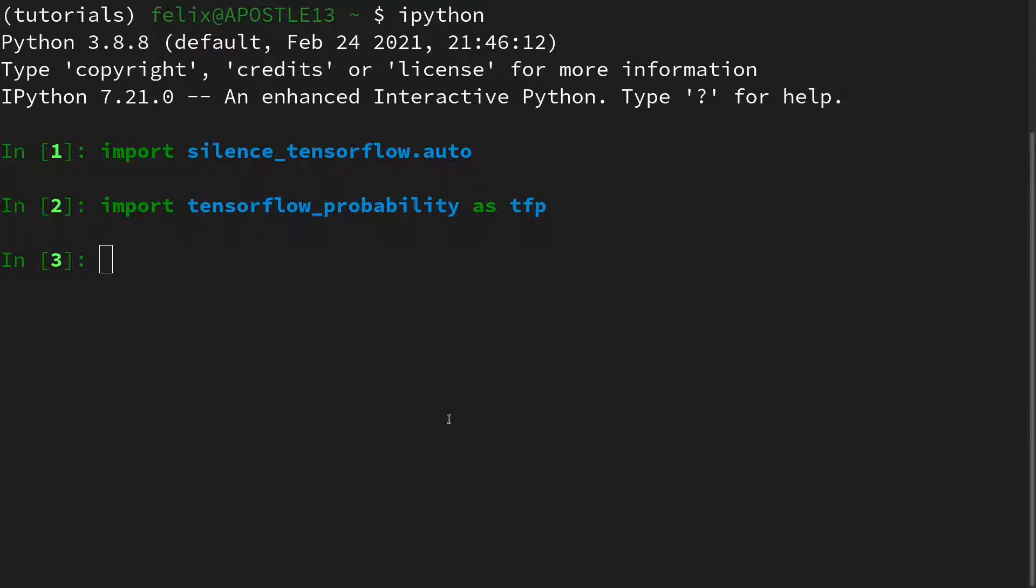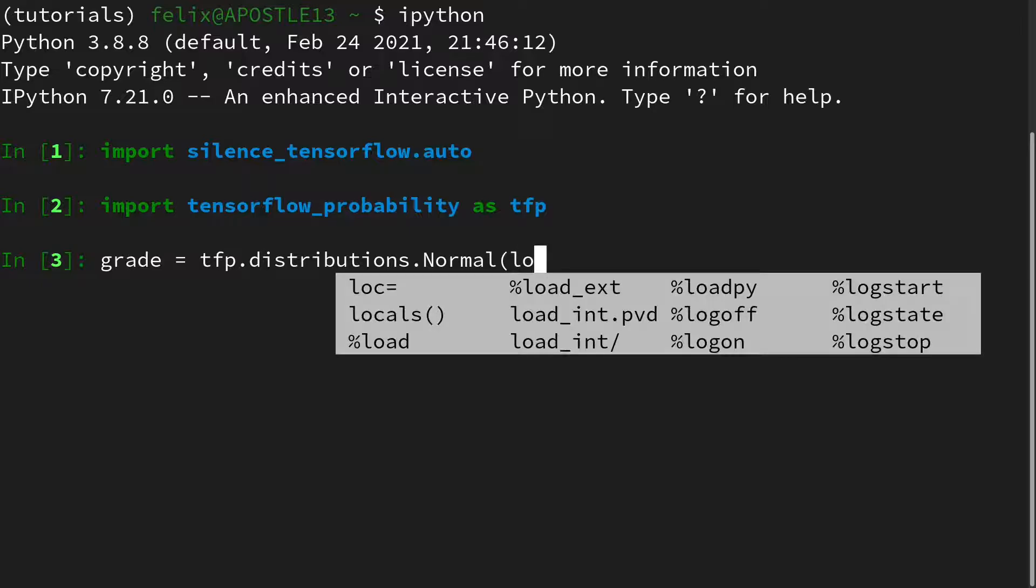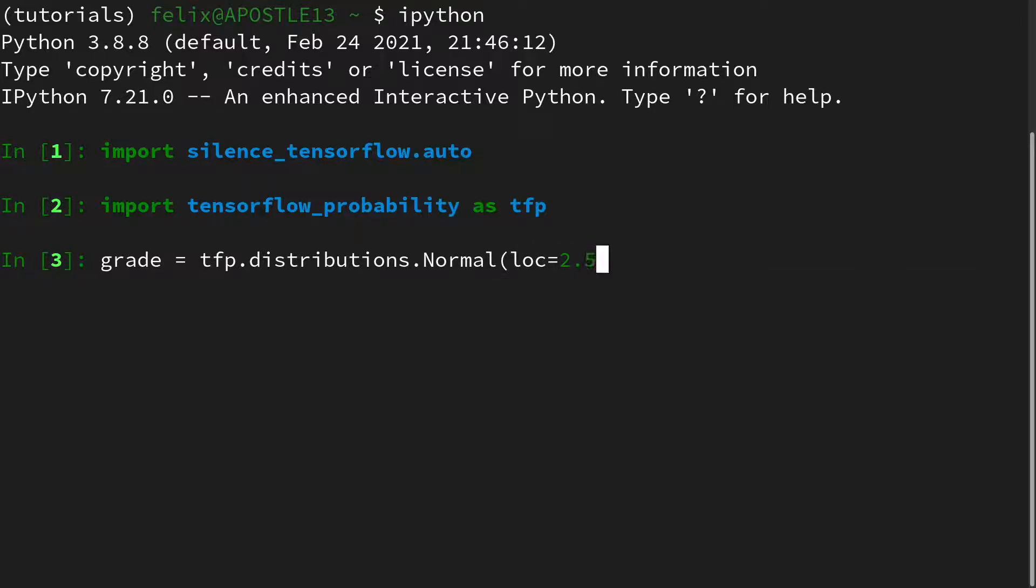Lastly let us look how it is implemented in TensorFlow Probability. For this I have all the packages already loaded in an interactive Python session. Then we will create a grade random variable which is a tfp distribution normal. And it takes two parameters first a location and we center it around 2.5. And the scale let's say for instance 0.5 to make it really narrow as we have seen it in the visual example.